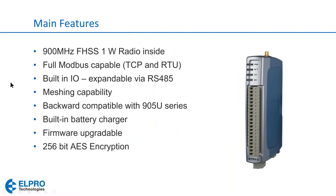This radio, the 915U2, is a 900 megahertz frequency hopping spread spectrum radio. Spread spectrum means you can use it anywhere in North America. It is license free — the customer does not need to apply to the FCC for a license because Elpro has already got this radio certified.